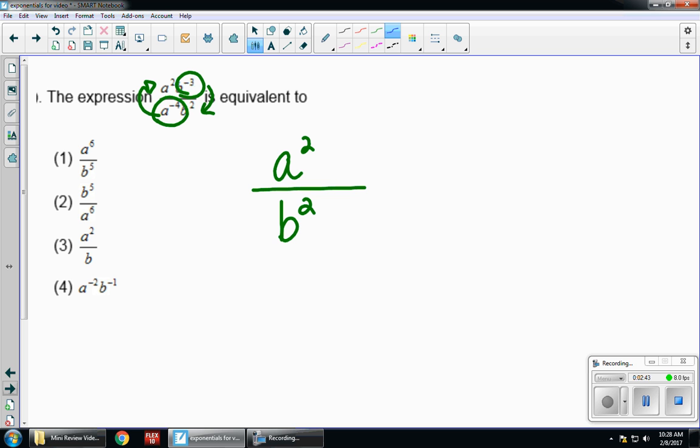That a to the negative 4th goes up to the numerator as a to the positive 4th, and that b to the negative 3rd comes down to the denominator as b to the positive 3rd. Then applying my laws of exponents that I know. When I multiply, I add. This becomes a to the 6th over b to the 5th. Choice 1.